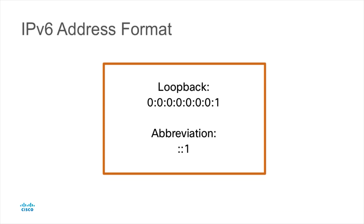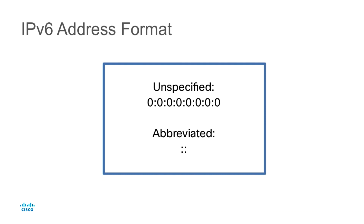In IPv4, the loopback address is 127.0.0.1, used to test the IP stack and allow communication within your own system. IPv6 has the same concept. The IPv6 loopback address is 0:0:0:0:0:0:0:1, which can be abbreviated with the double colon as ::1. An unspecified address is all zeros, abbreviated simply as ::.